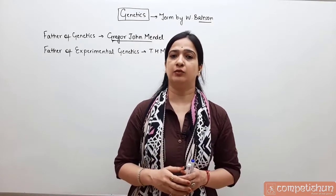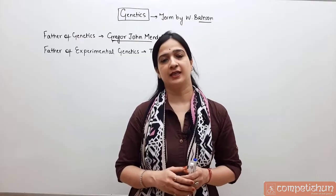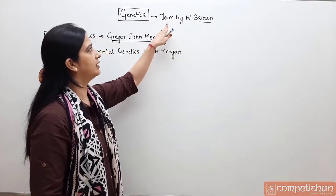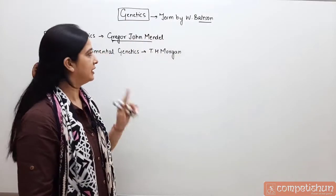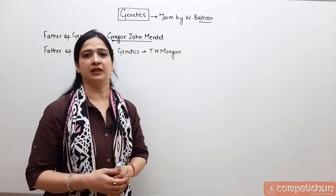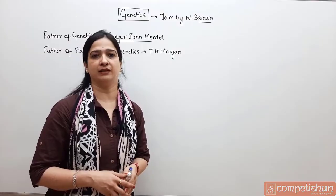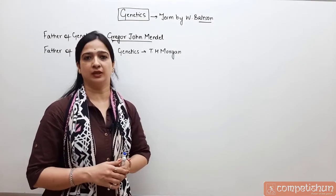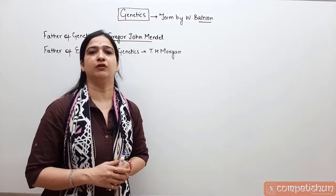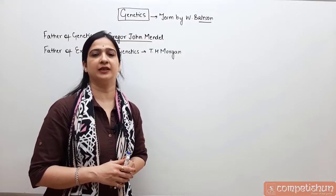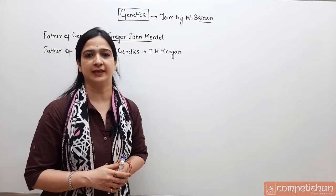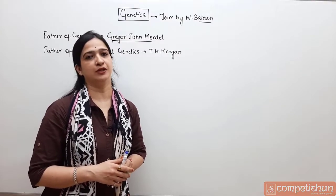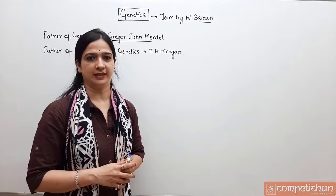Genetics se related bhot sare scientists ke naam aate hain. Sabse pehla naam aata hai Bettison ka, who gave the term genetics. Then naam aata hai Gregor John Mendel ka, who is also known as the father of genetics. Then aata hai Thomas Hunt Morgan ka, who is known as the father of experimental genetics — Morgan ne experiments karay thay and that's why he is known as the father of experimental genetics.